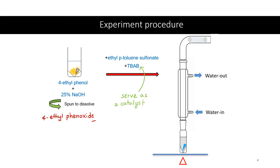The whole purpose of TBAB is to serve as a catalyst — specifically a phase transfer catalyst. If asked what is the purpose of TBAB in this reaction, it is to serve as a phase transfer catalyst and facilitate the reaction between 4-ethylphenoxide and ethyl p-toluenesulfonate.